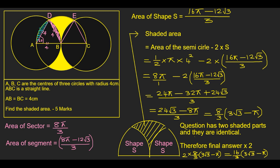You simplify: 4 squared is 16, 16 divided by 2 is 8 pi over 1, minus 2 times 16 pi minus 12 root 3 over 3. Common denominator is 3, so that becomes 24 pi minus 2 times 16 is minus 32 pi, minus times minus is plus 24 root 3. 24 pi take away 32 pi is minus 8 pi, so 24 root 3 minus 8 pi over 3. That equals 8 over 3. I can factorize 8 out, so 3 root 3 minus pi. The question has two shaded parts, top and bottom, and they are identical. Therefore the final answer times by 2: 2 times 8 is 16 over 3, times 3 root 3 minus pi. This is our answer.